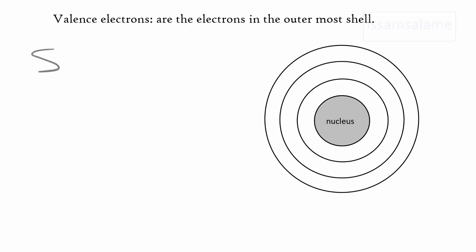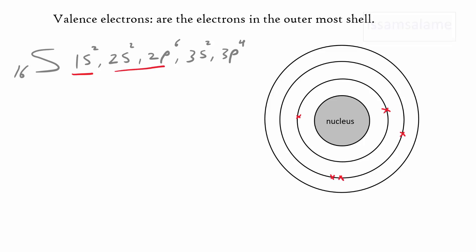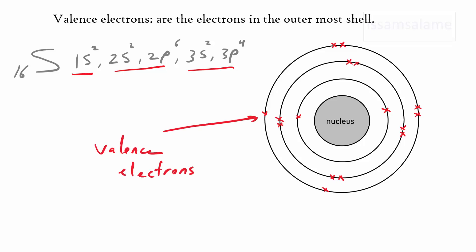Let's have another example about sulfur with 16 electrons. The electronic configuration for sulfur is 1s2, 2s2, 2p6, 3s2, 3p4. If you count the number of electrons in its first shell, we have only two electrons; in the second we have eight, and in the third shell we have six electrons. So we can say that sulfur has six valence electrons since it has six electrons in its outer energy shell.